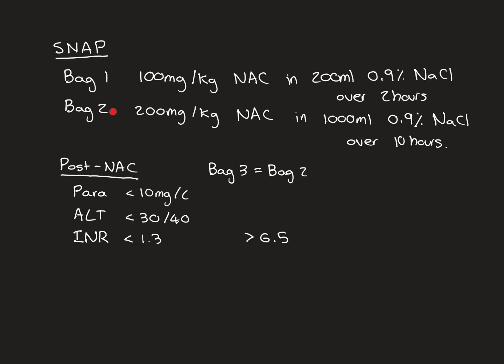You begin with the first two infusions of NAC, everyone gets those. Then after the second infusion is complete, you do post-NAC blood tests. You measure the paracetamol level, you measure the ALT value, and the INR value. If all three of these come back in acceptable ranges, then the patient passes the post-NAC bloods, they don't need to have further NAC treatment, and they are now ready to be discharged. In my experience, most patients do pass the post-NAC bloods. In the patients who fail to pass the post-NAC bloods, only one of them needs to be outside of the acceptable range, and you then cast that as a fail, and you're going to go on to the third bag of NAC.